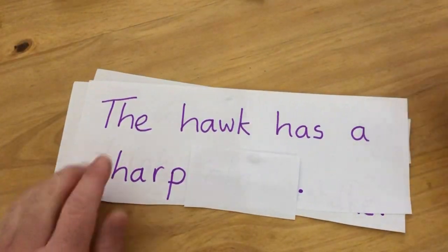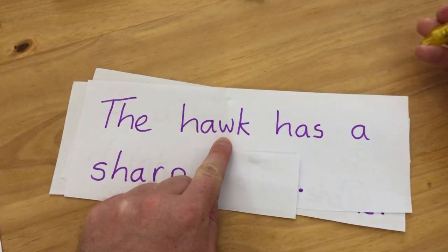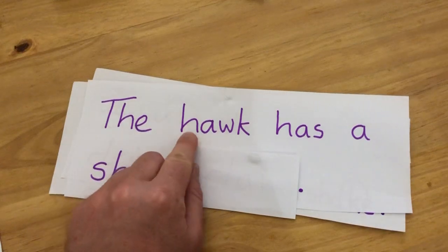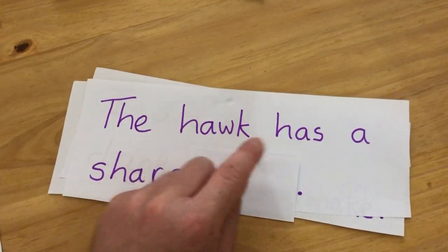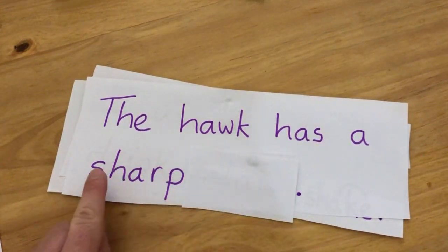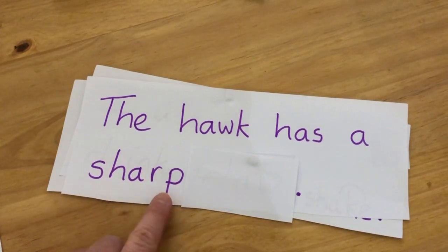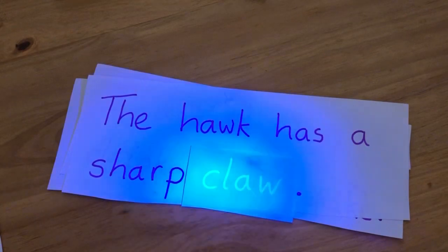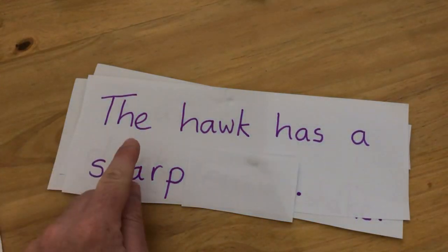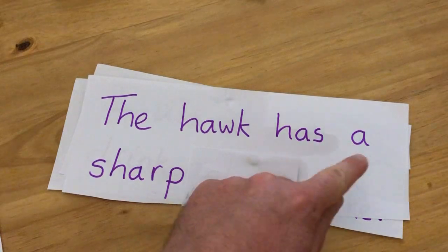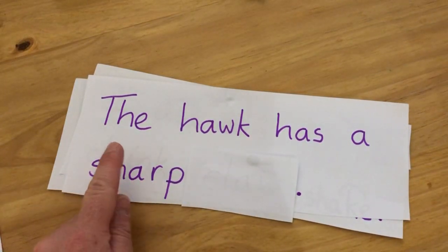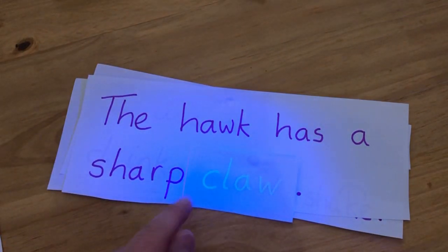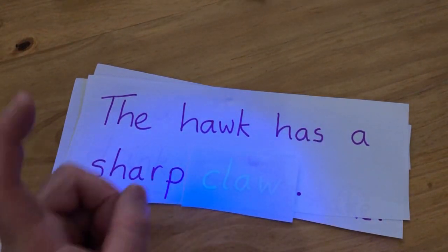There is today's aw digraph, and there's the aw digraph. Are you ready? Go for it. Oh, my turn. The hawk has a sharp... the hawk has a sharp claw. The hawk has a sharp claw. Let's look at the next one.